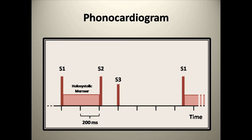Some will also use the word Tennessee to identify an S4. Maybe I say Tennessee strangely, but I personally don't find that quite as helpful as the Kentucky trick. Let's actually take away the S3 and hear the difference — the murmur will probably be easier to identify as systolic without the S3.